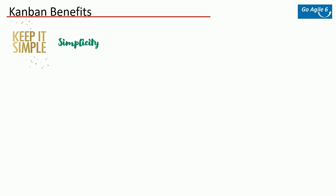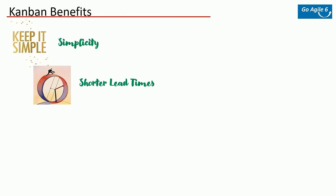Let's look at some benefits of using Kanban. Number one is simplicity — by far this is the least invasive agile framework: fairly simple, flexible, and easy to execute. You don't need a lot of transition or knowledge compared to other frameworks. Number two is shorter lead time. Cycle time is a key metric for Kanban teams — it's the amount of time it takes for a unit of work to travel through the team's workflow from the moment work starts to the moment it ships.